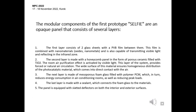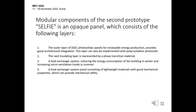The panel is equipped with slanted deflectors on both the interior and exterior surface. Modular components of the second prototype SELFIE is an opaque panel which consists of the following layers. The outer layer of DSSC photovoltaic panels for renewable energy production provides good architectural integration. This layer can also be implemented with polycrystalline photovoltaic panels. The next insulating layer is represented by a phase transition material — a heat exchanger system reducing the energy consumption of the building in winter and creating micro-ventilation inside in summer. An exchanger panel consisting of lightweight materials with good mechanical properties which can provide mechanical safety.